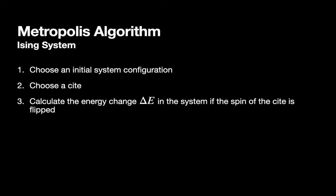If we apply our Metropolis algorithm to this system, we would do so by first choosing an initial random configuration of our lattice, then we would choose a random site and we would calculate the change in energy of the system if we were to flip the site's spin.